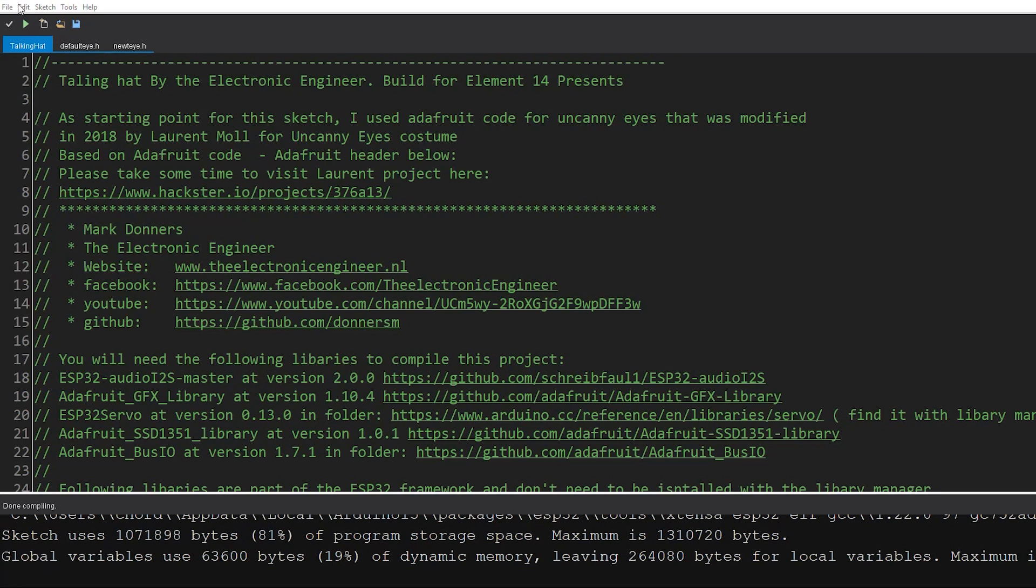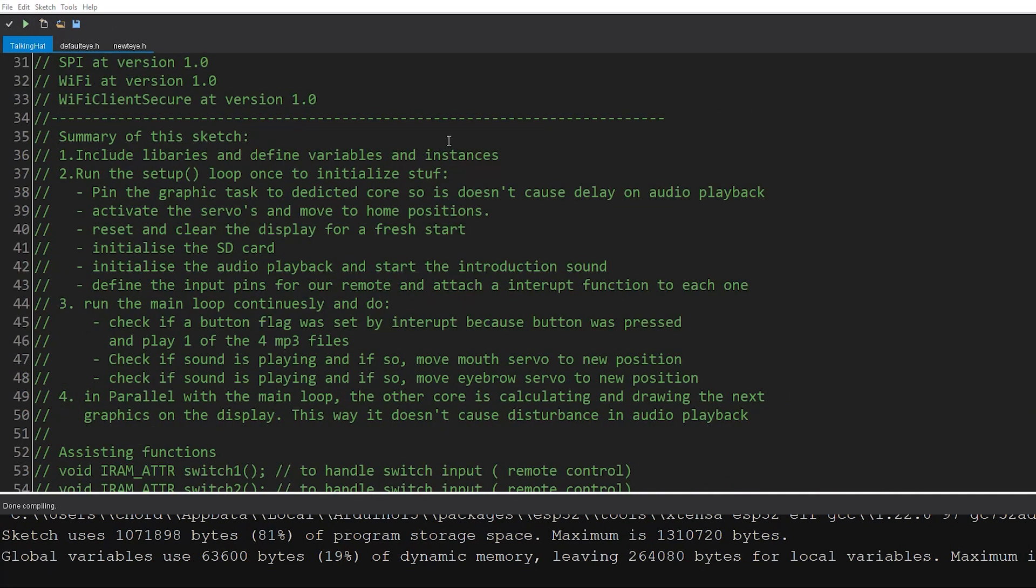Okay, so the sketch you have to load is called TalkingHead. First, it will include all the libraries. And of course, I will define the variables and instances. Then it will run the setup once. It does several things. It pins the graphic task to the dedicated core. Because I'm using two cores. And I'm activating all the servos. And I will move them to a home position. I will reset and clear the display for any leftover static that is there that I don't want. And of course, I will initialize the SD card. I will initialize the audio. And I will immediately start playing the introduction sound. Of course, I have to define some input pins for our remote control. And I will attach some interrupt functions to each and every one of them.